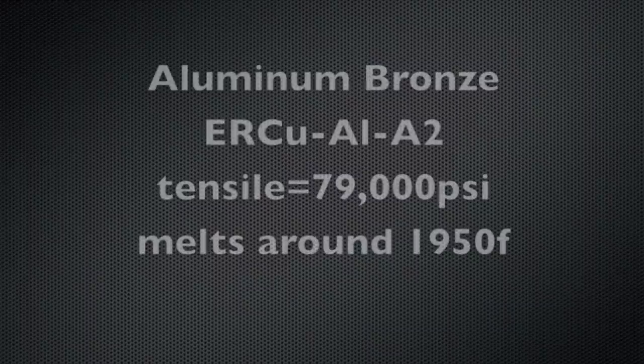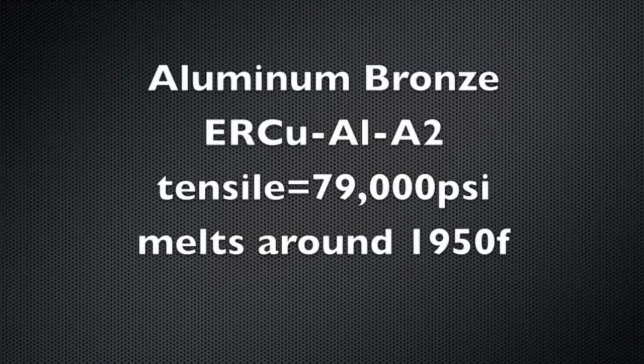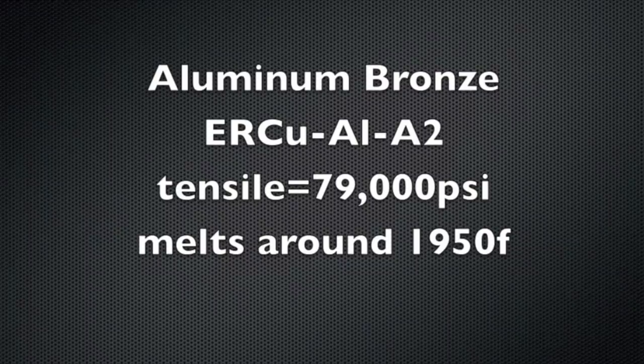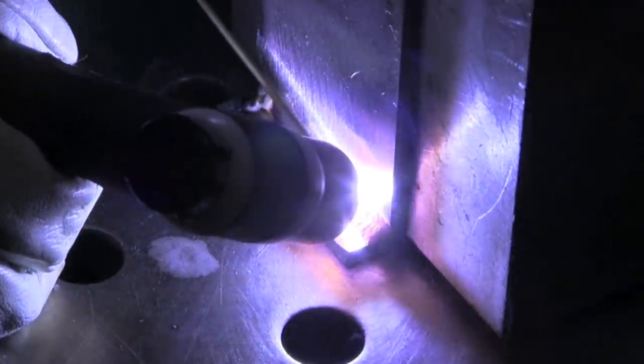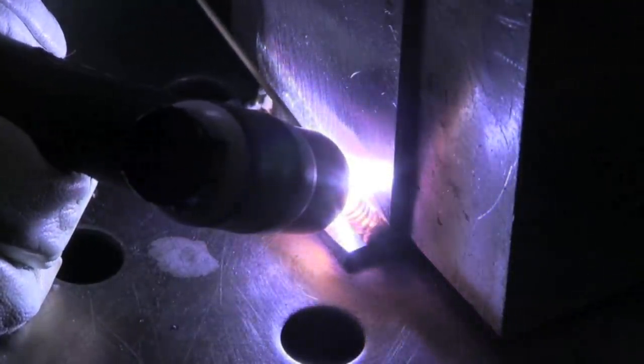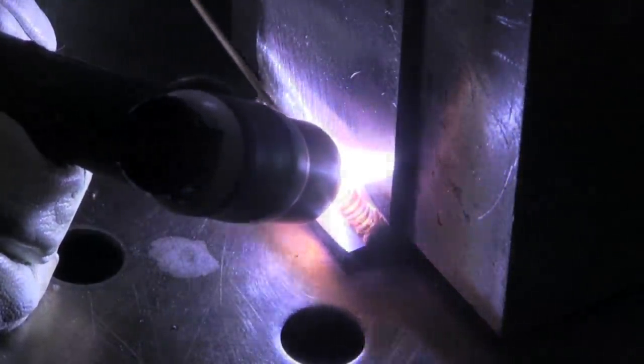Up next, we're going to do a little aluminum bronze. This is the A2 version of aluminum bronze. It's got a very high tensile strength, pretty much the same as the ER-70. So let's see how it does. Same exact technique. A lot of times aluminum bronze is sluggish. You really have to clean that filler wire because it does have quite a bit of aluminum.